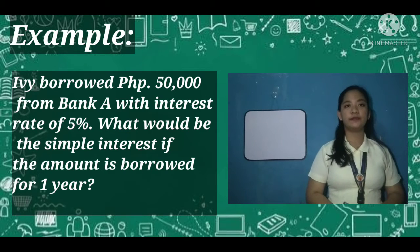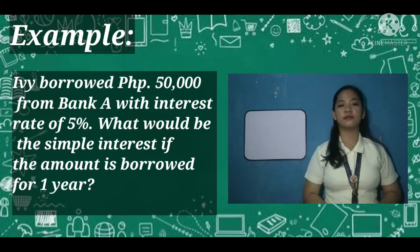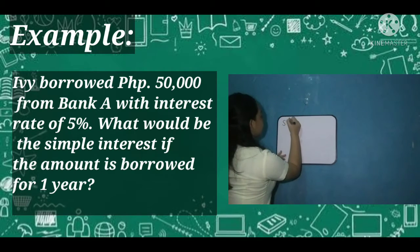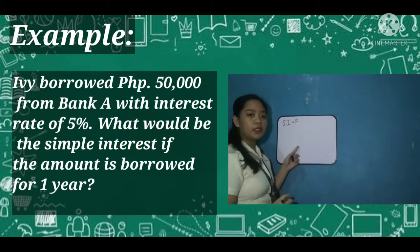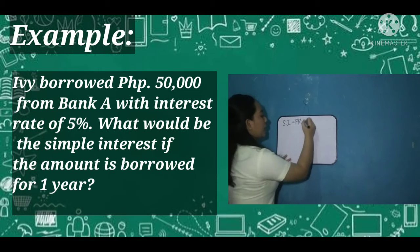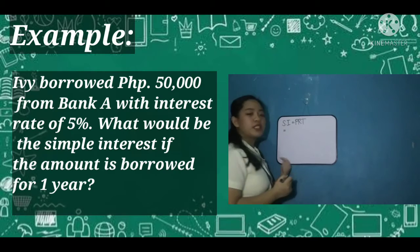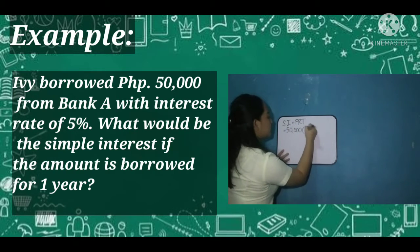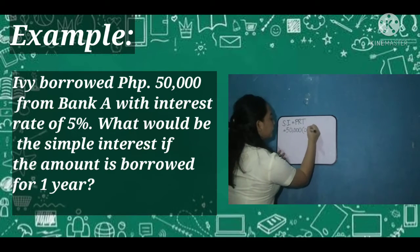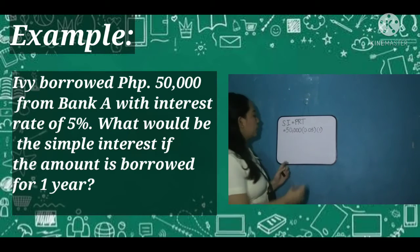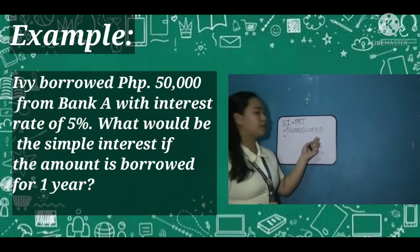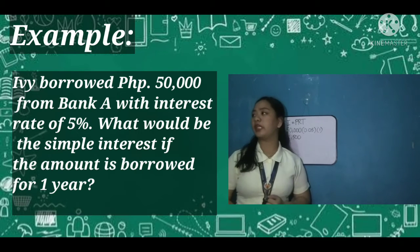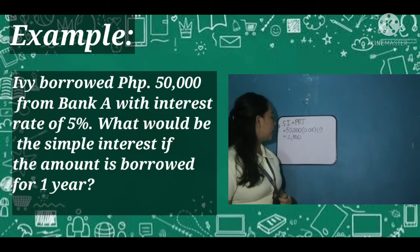Ivan, can you read example number 1? We can calculate this by using the simple interest formula: SI = P × R × T. The principal is 50,000. So, 50,000 times the rate of 0.05 (5%) times 1 year equals 2,500. The simple interest of 50,000 with an interest rate of 5% in one year is 2,500.